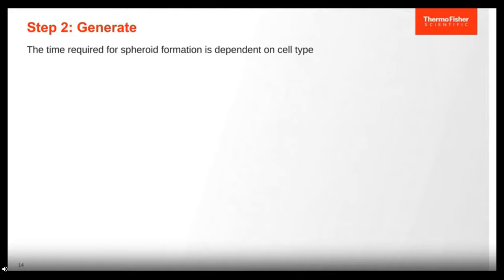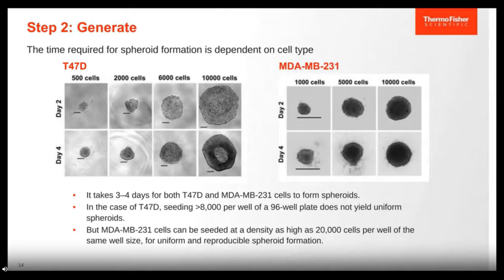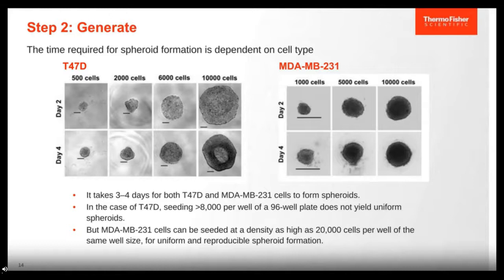Depending on the cell type chosen, spheroid formation may differ. For the two breast cancer cell lines — T47D and 231 — it takes both about three to four days to form spheroids, but they look visually different. For the T47D, it was noted that going above 8,000 cells per well does not yield a uniform spheroid — at 10,000 cells per well, by day four you see a really dark necrotic core forming in the middle. The 231 cells, by contrast, can go up to 20,000 cells per well in the same time frame and still yield reproducible spheroids.